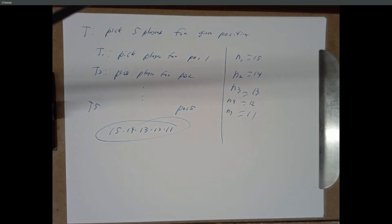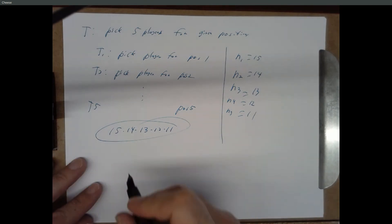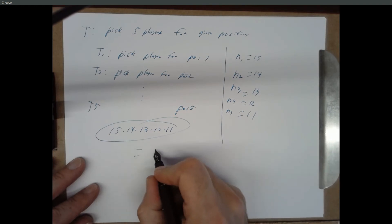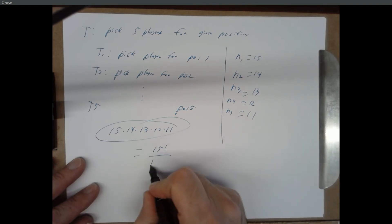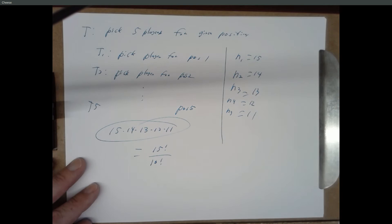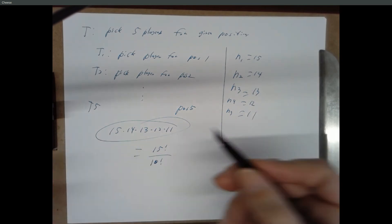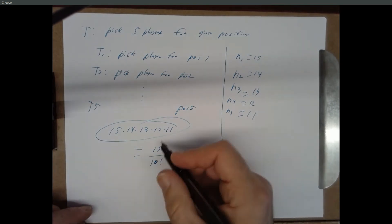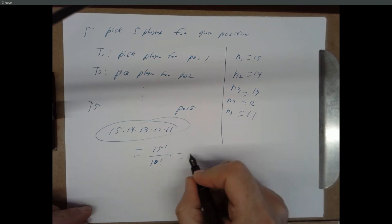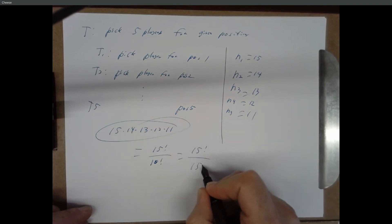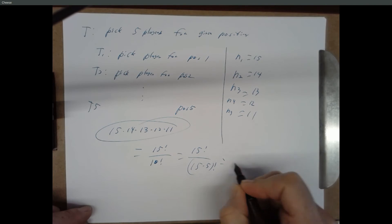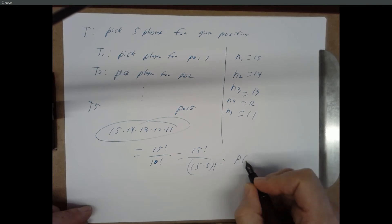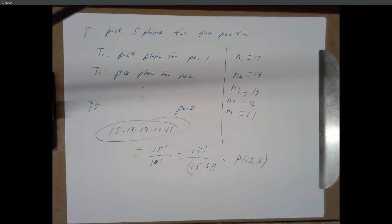And we can generalize — the last position we can fill with any of 11 possible players. The total number of ways is the product of the ways we can complete each subtask. This is equal to 15 factorial over 10 factorial, which is 15 factorial over (15 minus 5) factorial — the number of permutations of 5 chosen from 15, written P(15,5).